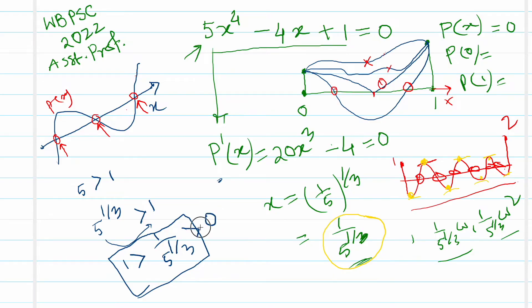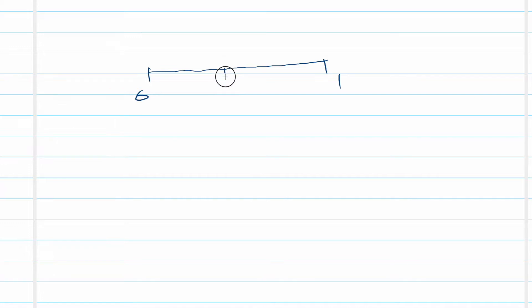So in the interval [0, 1] there is exactly one critical point, x = (1/5)^(1/3), located somewhere inside. Since this is the only critical point, the graph has either a local maximum or a local minimum at this point. We could use the second derivative to classify it, but we do not need to.